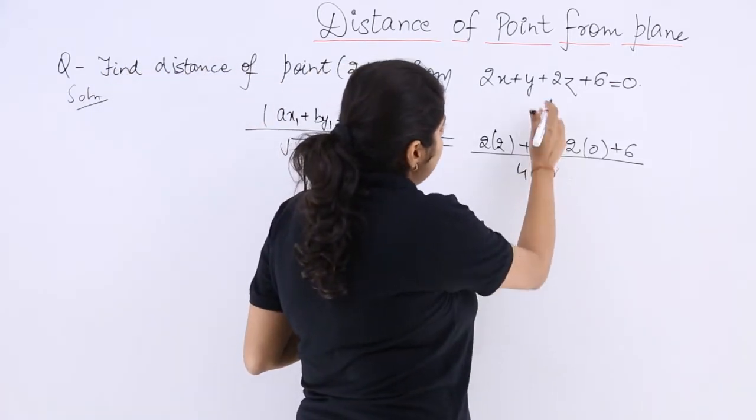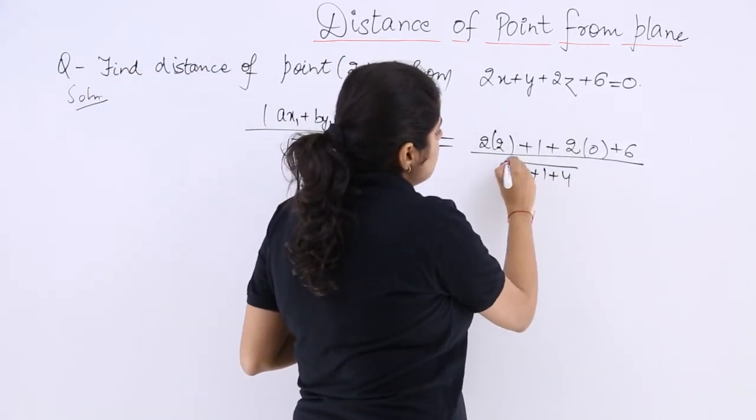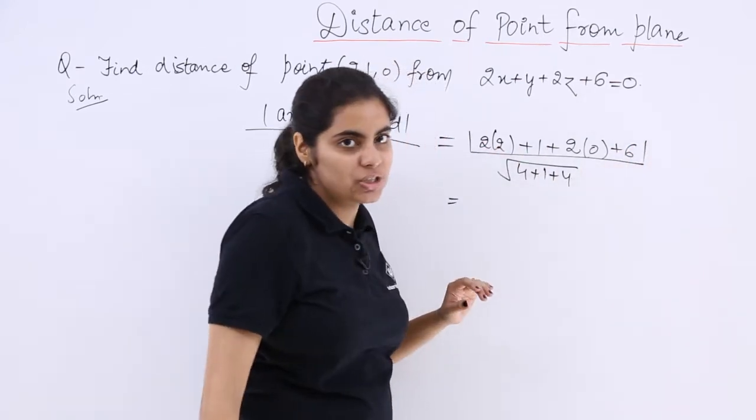So a² + b² + c² in the root, and this is going to be in the modulus sign.